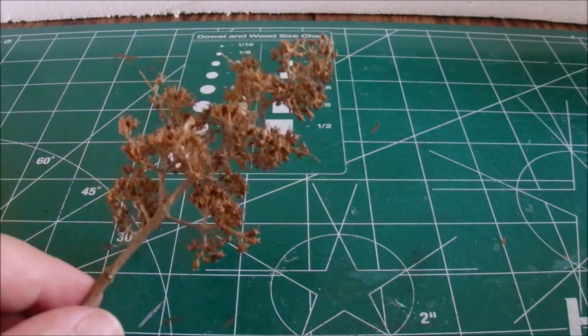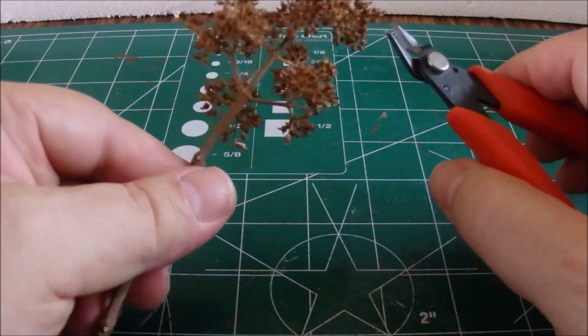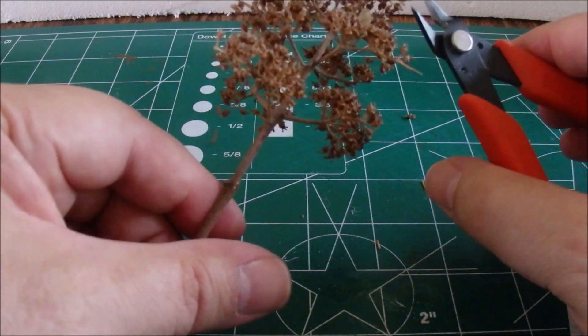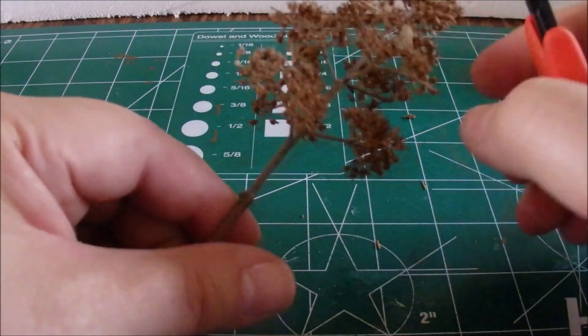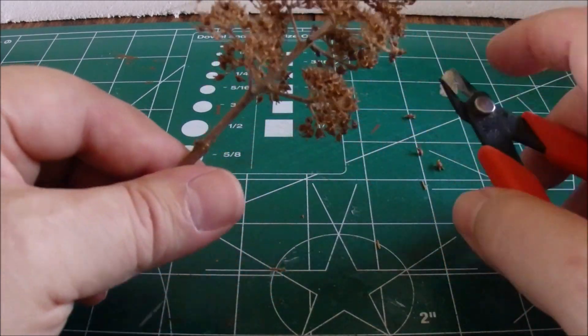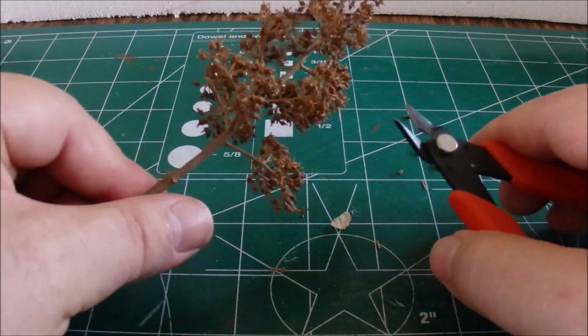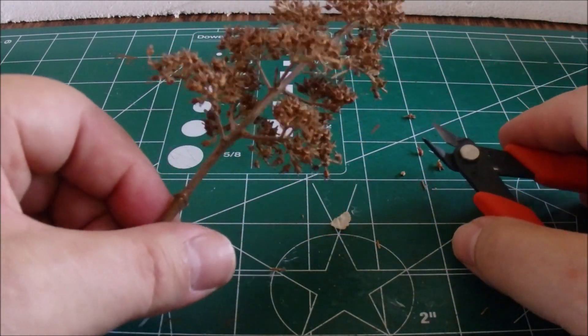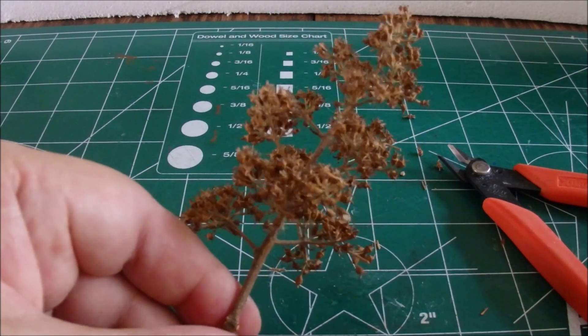We start out with some hydrangea bush clippings. These are really nice for making trees, they've got a nice natural color to them. We start by snipping off some of the little pokey out parts that we don't need, some old blossoms that can be clipped off, just trimming it down a little bit to clean it up.